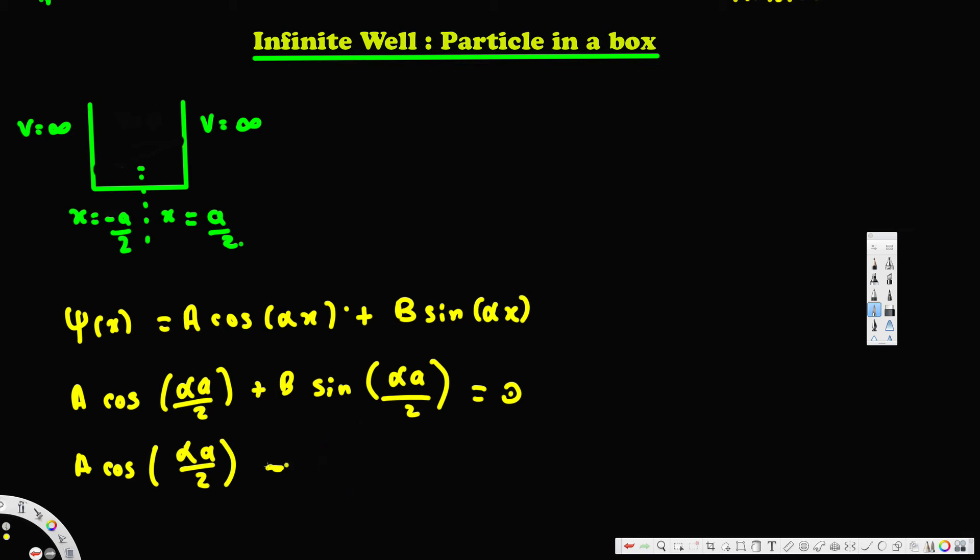So instead of putting the negative here, I can move this negative right here and keep this one as positive. So this is going to be -B sin(αa/2) = 0.